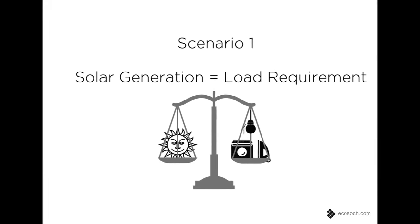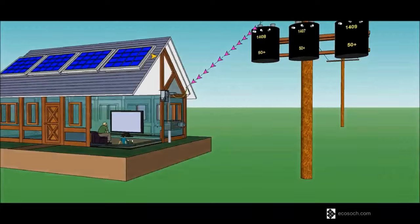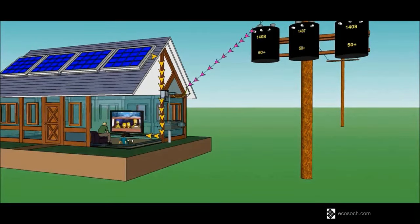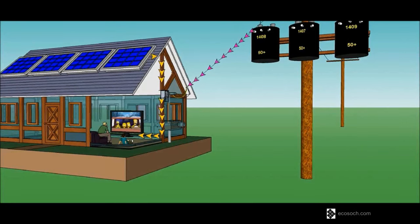When solar generation is equal to the load requirement, the loads are completely run by the solar power. The grid is available but power from it is not required at this time.